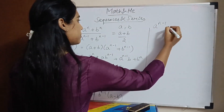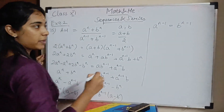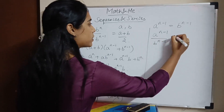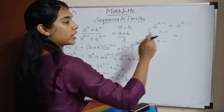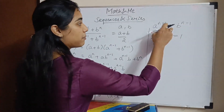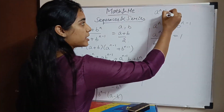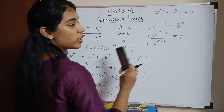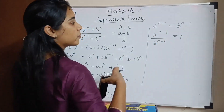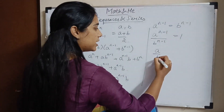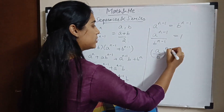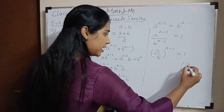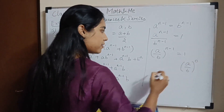So we have aⁿ⁻¹ = bⁿ⁻¹, which gives aⁿ⁻¹ / bⁿ⁻¹ = 1. This can be written as (a/b)ⁿ⁻¹ = 1. Since 1 can also be written as (a/b)⁰, and the bases are equal, the powers must be equal — a rule from indices learned in 9th or 10th standard.